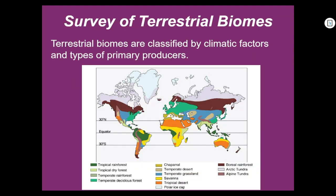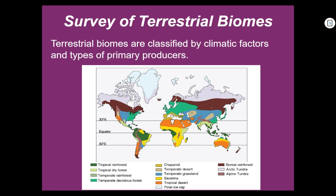Here is a survey of terrestrial biomes. Tropical rainforests are found in South America. The area where we live is subtropical. Florida and the eastern United States have temperate deciduous forests. Moving north, you reach the tundra and then polar ice caps. Tropical deserts are found in California, Nevada, Africa, and Australia. That's what the different biomes are.